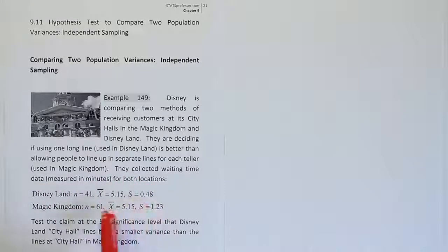So here's the waiting time information: the sample sizes, the sample means, and the standard deviations. Now they want us to test the claim at the 5% significance level that Disneyland City Hall lines have smaller variance than the lines at City Hall in Magic Kingdom.